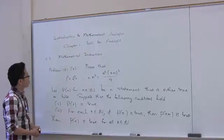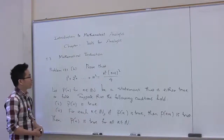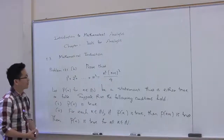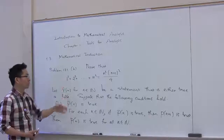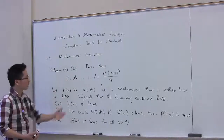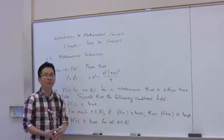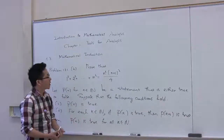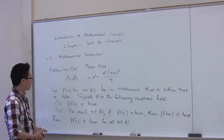In this video, we're going to work on problem 1.3.1 from the textbook. Prove that 1 to the third plus 2 to the third plus so on plus n to the third is equal to n squared times n plus 1 squared over 4.